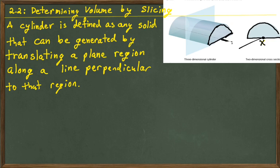We have an example of what the definition of cylinder is. This kind of looks like half of a cylinder, but this is the definition of a cylinder — an example of a three-dimensional cylinder.